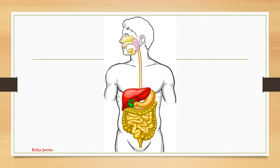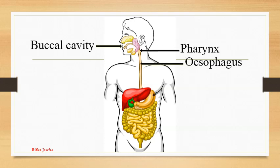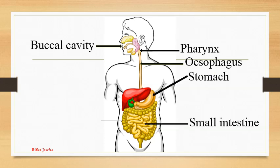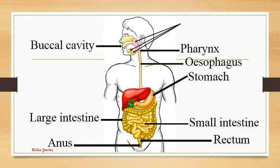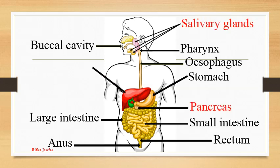It is a single tube that runs from mouth to anus. The main parts are buccal cavity, pharynx, esophagus, stomach, small intestine, large intestine, rectum and anus. In addition, salivary glands, pancreas and liver are glands connected to the digestive system, and the gallbladder is another part.